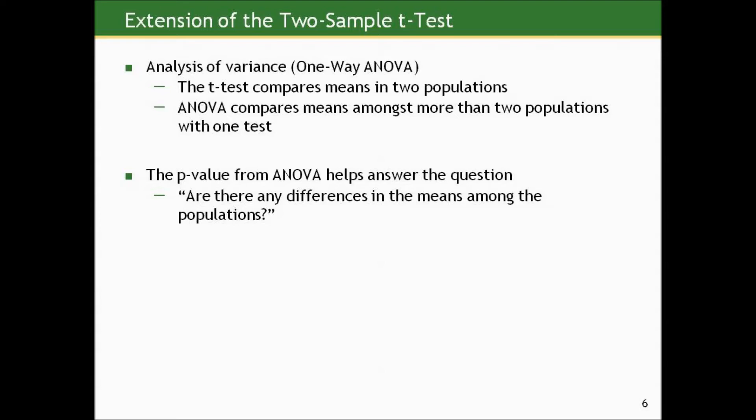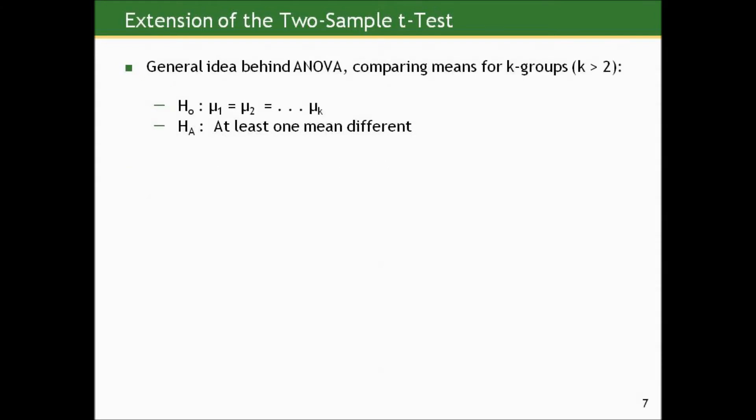All we can get from ANOVA is a p-value, and the p-value from ANOVA helps answer the question: are there any differences in the means between the populations we're comparing? The general idea behind ANOVA, when we're comparing the means for k groups, k is just a number greater than two.